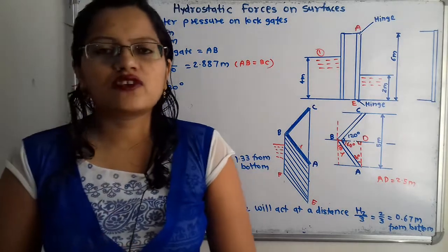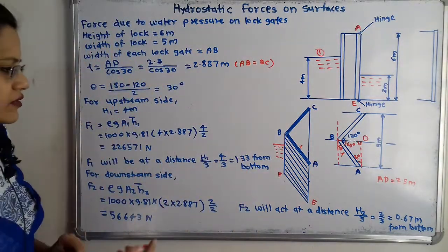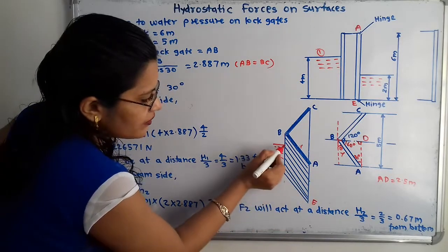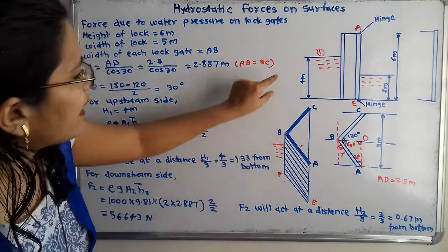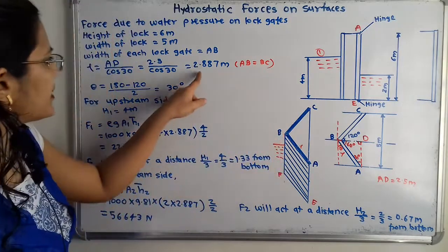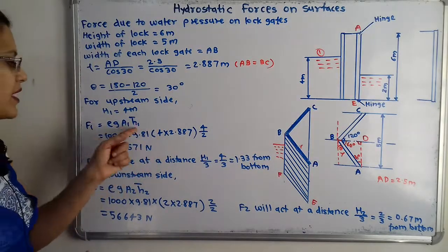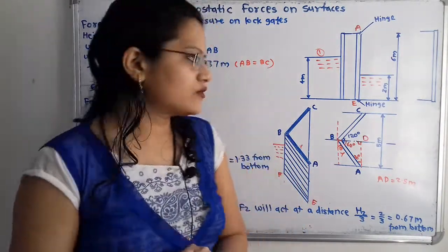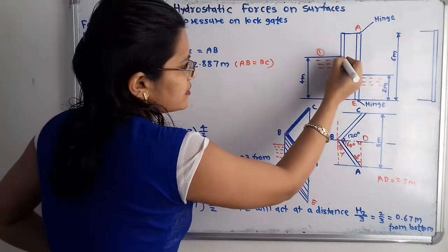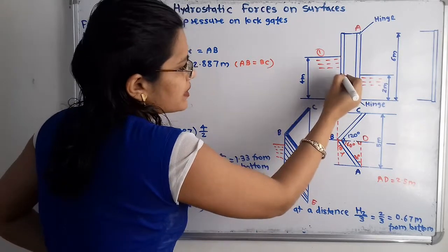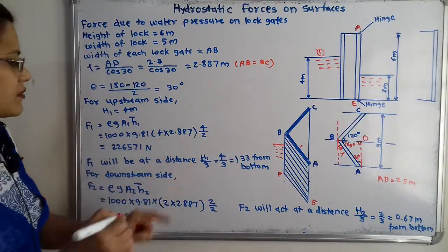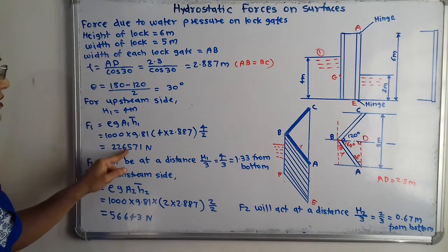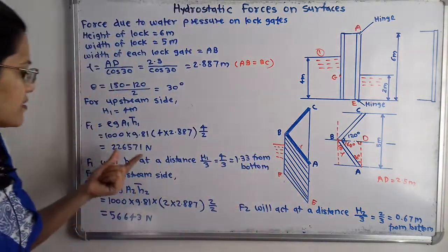H1_bar is the distance of the center of gravity from the free surface of water, which is 4/2 = 2 meters. When we calculate F1 = ρ·g·A1·H1_bar, we get the answer 226,571 Newtons. So this is the force F1.